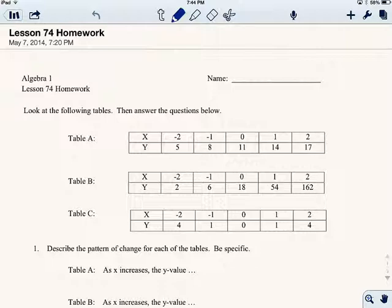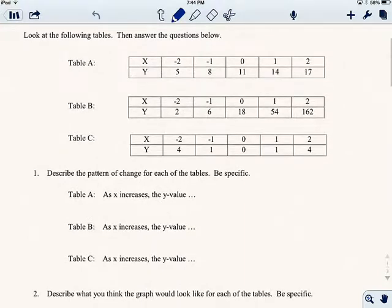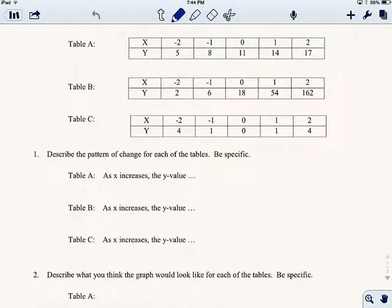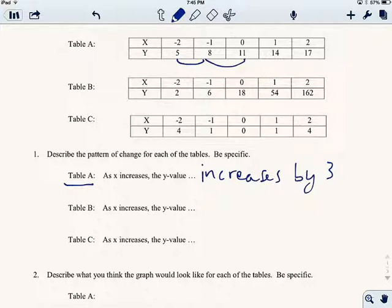So if you look at the following tables, we do Table A, Table B, and Table C. Now obviously they're all different tables. It asks me to analyze what's going on. So in Part 1 here, it says Table A as X increases the Y value dot dot dot. So what happens as X increases? Well, we see as X increases, the Y value also increases. And if we look at it, we see that it's increasing by 3. So the Y value increases by 3.